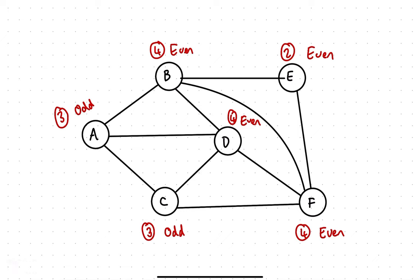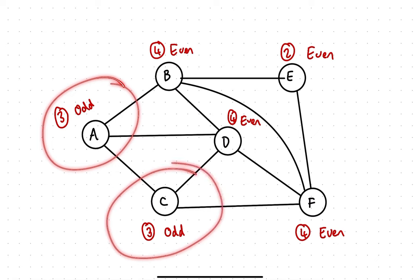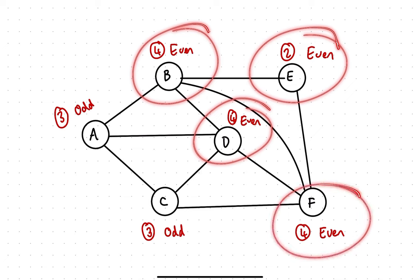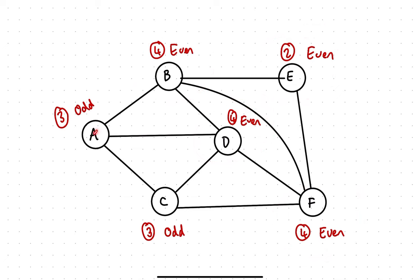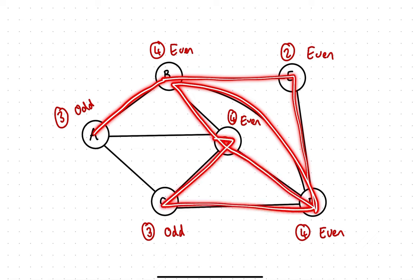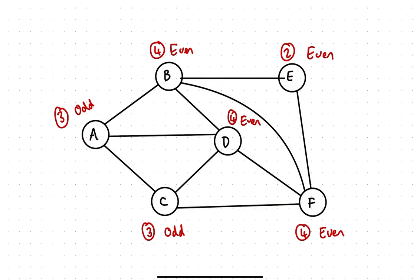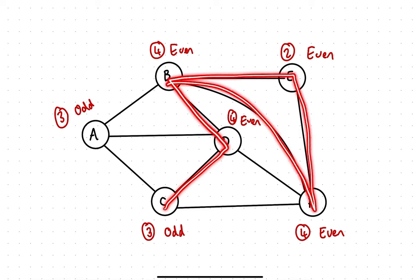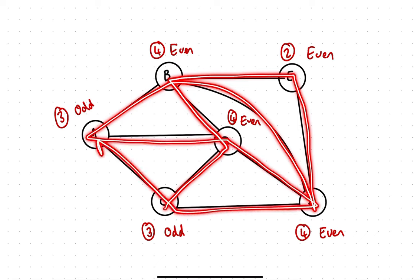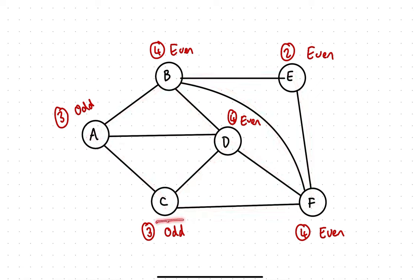Semi-traversable means there are only two places where you can start and inevitably finish, and those two places are the odd nodes. You cannot navigate this entire network starting at any of the even nodes. For example, if I start at A — going to B, E, F, back to B, then D, F, C, D, A — I can finish at C, having travelled along every edge exactly once. If I start at C, I'll navigate the entire network and finish at A. So in a semi-traversable network, you start at one odd node and finish at the other.